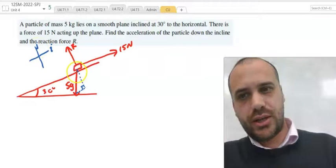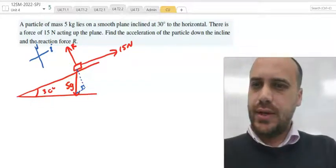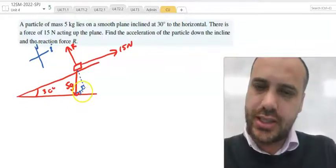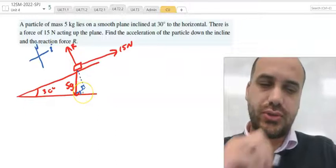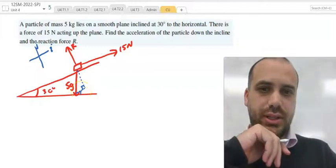And all we need to do is break that gravity component up into I and J components. Now, looking at the angles here, this angle here is 30 degrees and we can use that to find out how much that is right there.